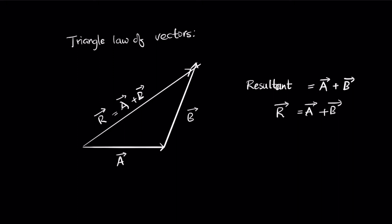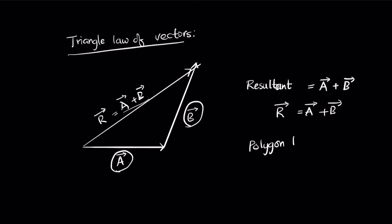The triangle law basically says: if the two sides of a triangle are represented by two vectors, the opposite closing side represents the resultant — the addition of these two vectors. We can expand this to another type of law called the polygon law of vectors.